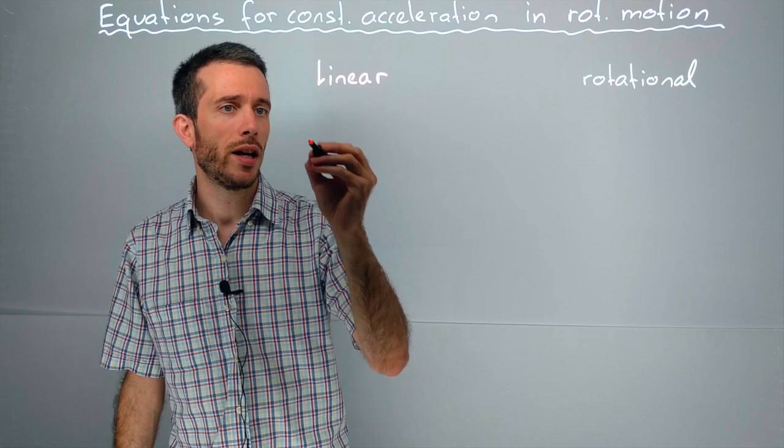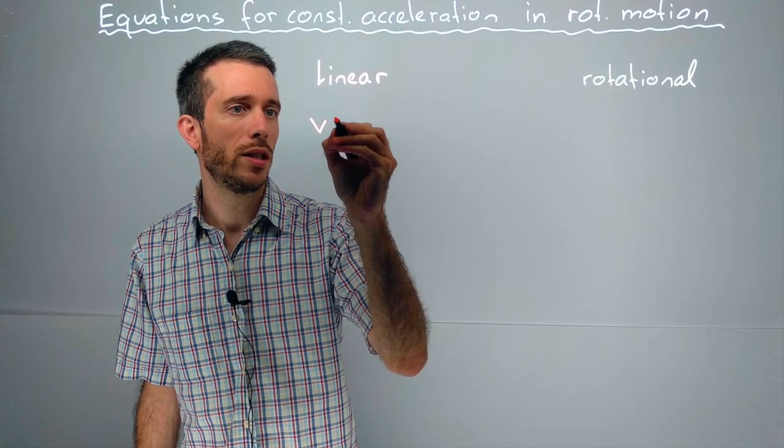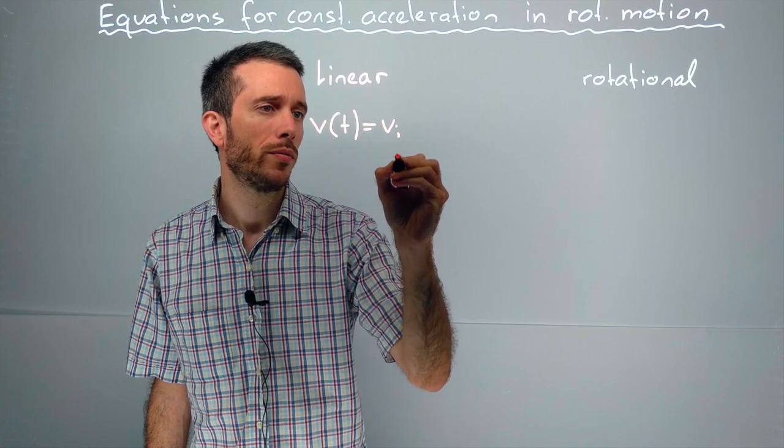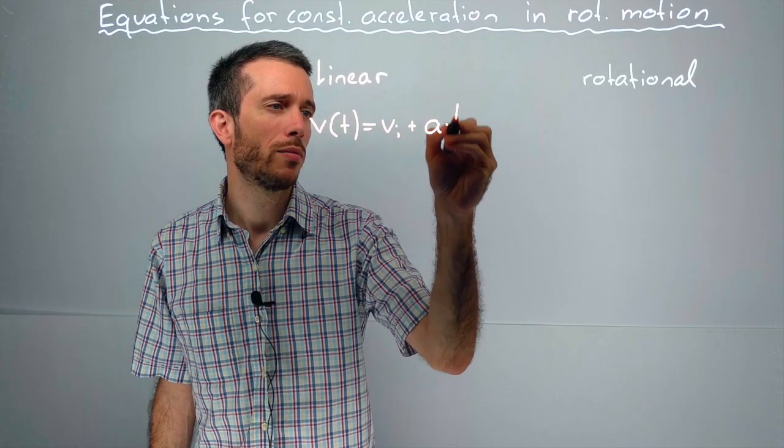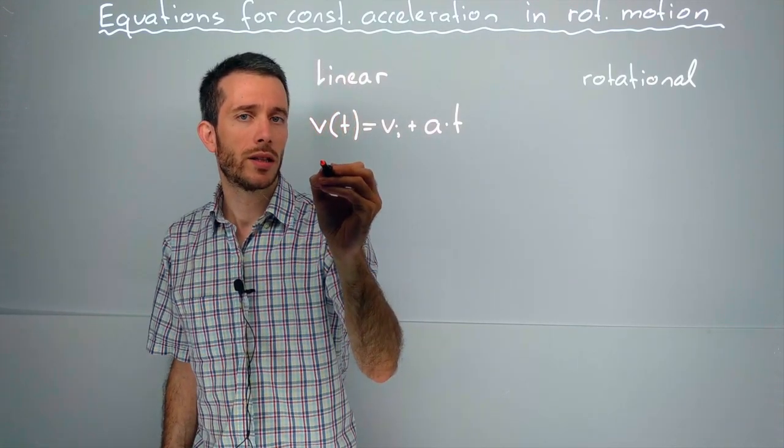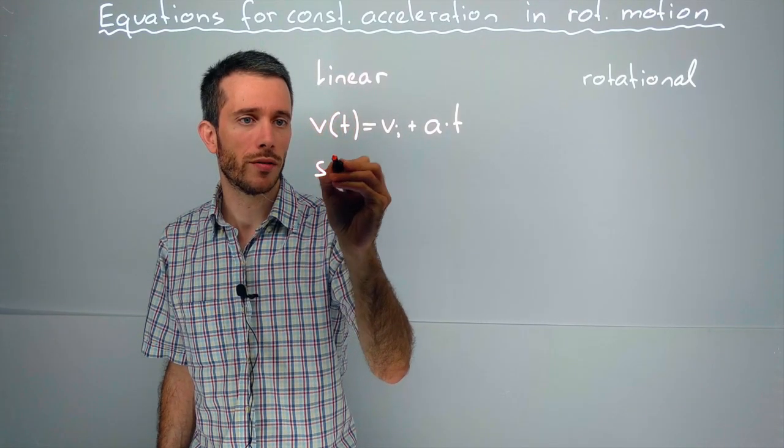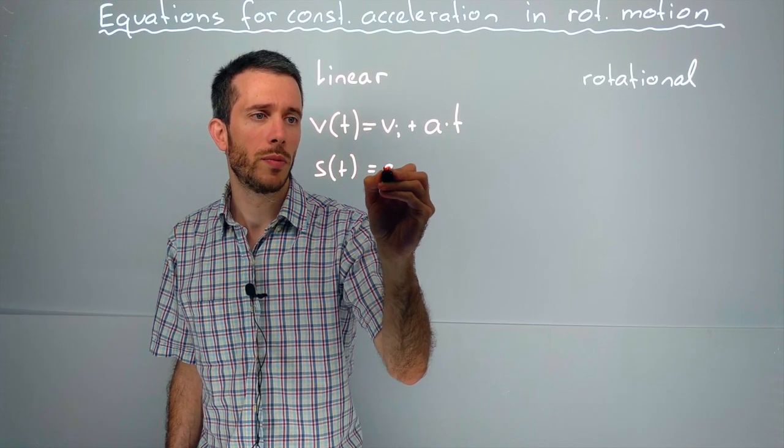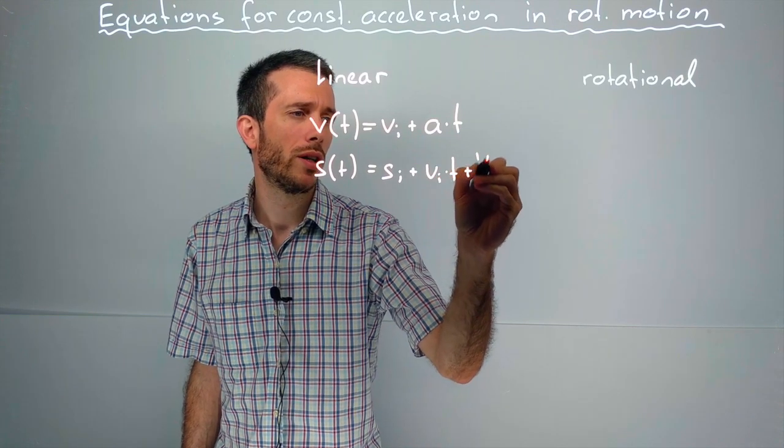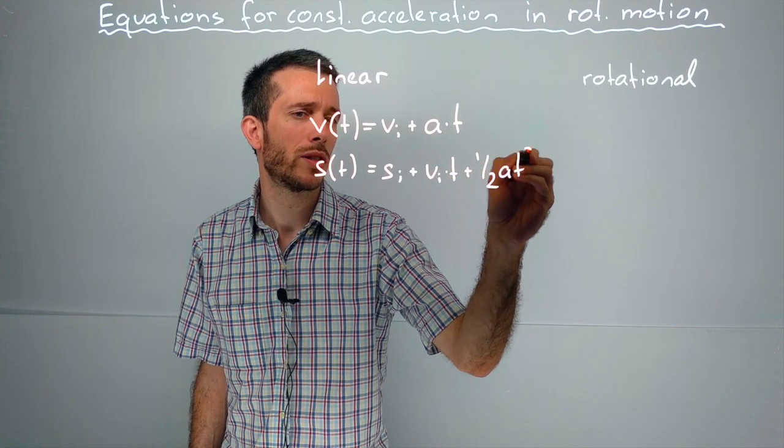In the linear case, I had that velocity as a function of time is my initial velocity plus acceleration times time. I also had that my position as a function of time is my initial position plus my initial velocity times time plus one-half acceleration times t squared.